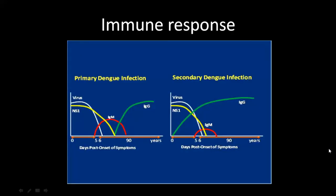The immune response to Dengue virus includes a primary and a secondary immune response. Initially there is viremia or antigenemia when virus levels are very high, and one particular antigen known as NS1 antigen is present on the viral surface with very high levels in blood. Later, the immune system mounts a response in the form of IgM antibody, which later switches to IgG. Whenever a person is infected a second time with Dengue virus, the already-formed IgG is responsible for the antibody-dependent enhancement phenomenon.